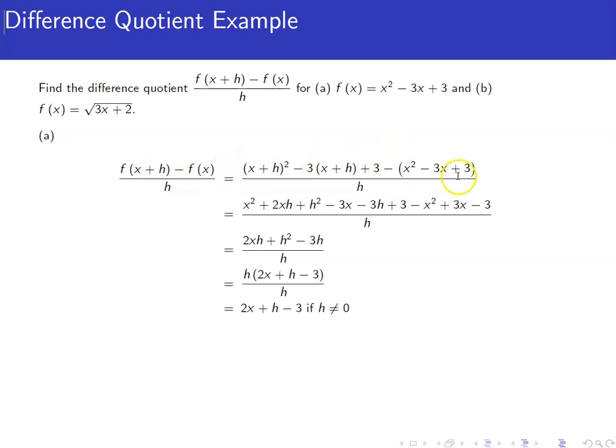We'll subtract off the f of x, which is x squared minus 3x plus 3, and then all over h.